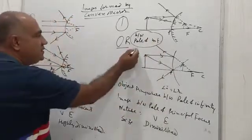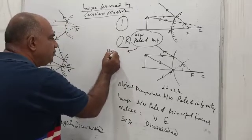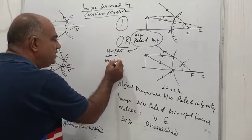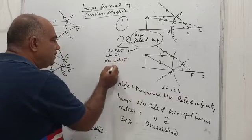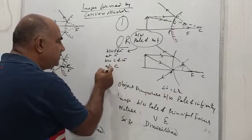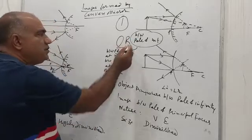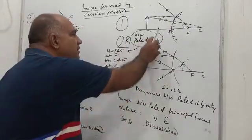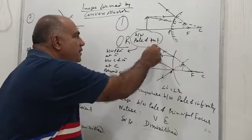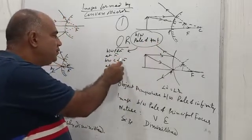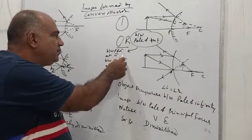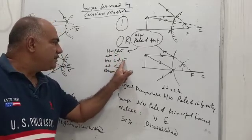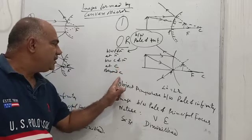The five positions of the concave mirror are: one — between pole and focus; two — at focus; three — between center of curvature (C) and focus (F); four — at C; and five — beyond C. In the case of a convex mirror, the single position — object between pole and infinity — corresponds to all five of these positions combined.